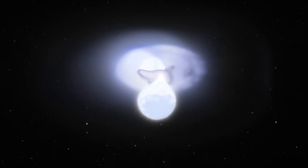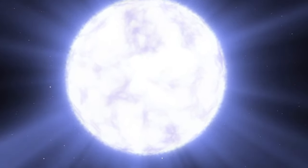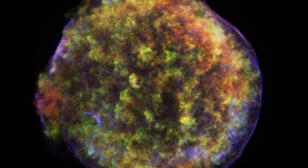Usually this would destroy the white dwarf. However, a type 1a X supernova is theorized to be a weaker explosion that does not rip the dead star apart.